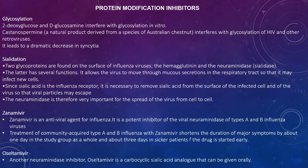Finally, looking at oseltamivir: this is another neuraminidase inhibitor. Oseltamivir is a carbocyclic sialic acid analogue and can be given orally. That's the end of the video today. Thank you very much for watching. In our next videos we will focus on antibodies, antibody processing, and antigens. Thank you very much.